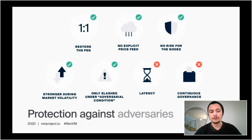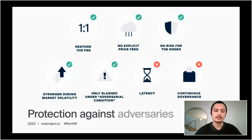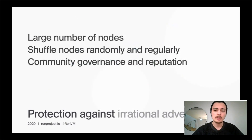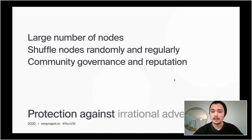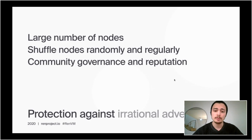The downside is that there's latency — if you increase fees, the bond value doesn't instantly increase, nor does demand instantly drop. But this is why we have other protection mechanisms. To protect against an irrational adversary and against this latency, you introduce a large number of nodes. RenVM uses 200 nodes, and we shuffle those nodes randomly and regularly — literally every single block if you want to. The only limiting factor is the fees of the underlying chain, like Bitcoin. You can also introduce community governance and reputation to help secure the system, which an irrational adversary typically has a much harder time subverting.